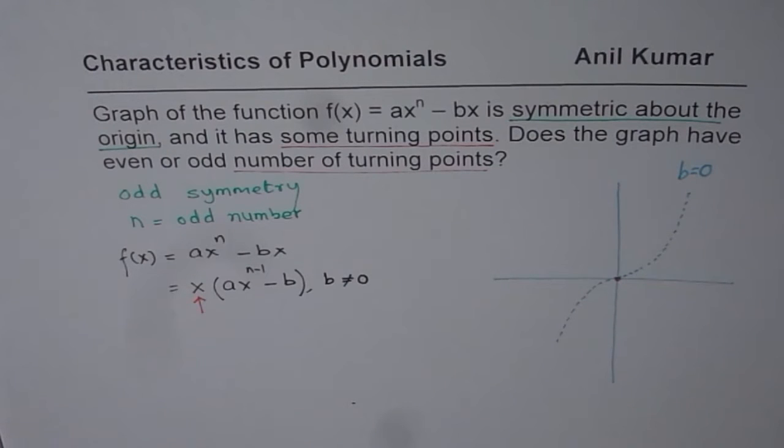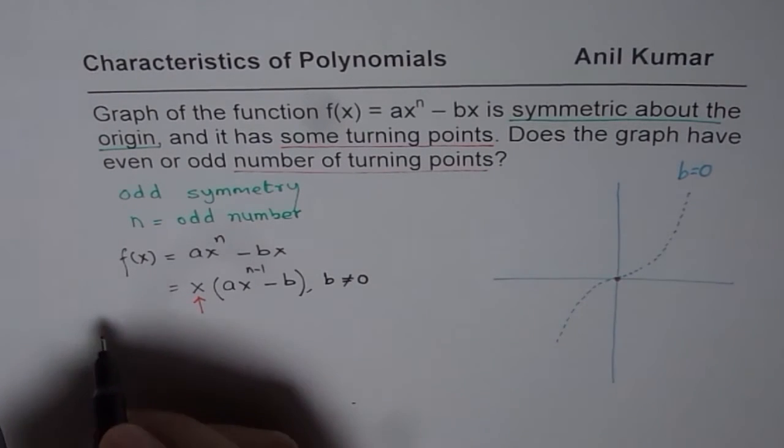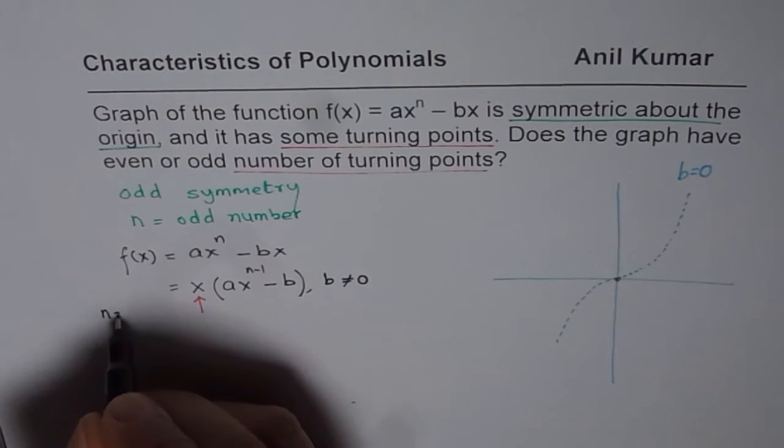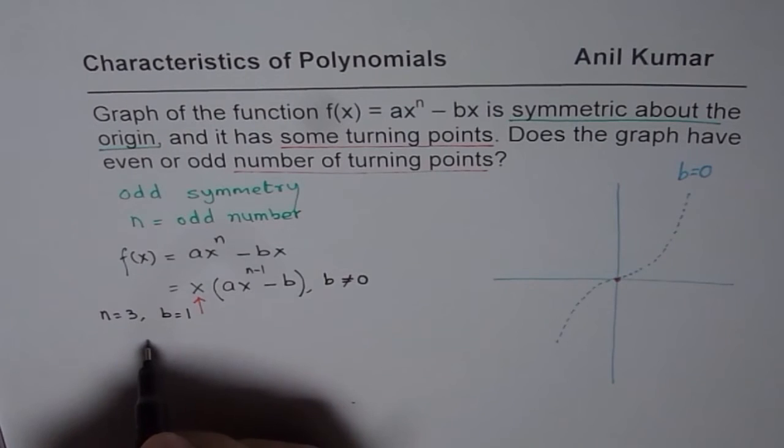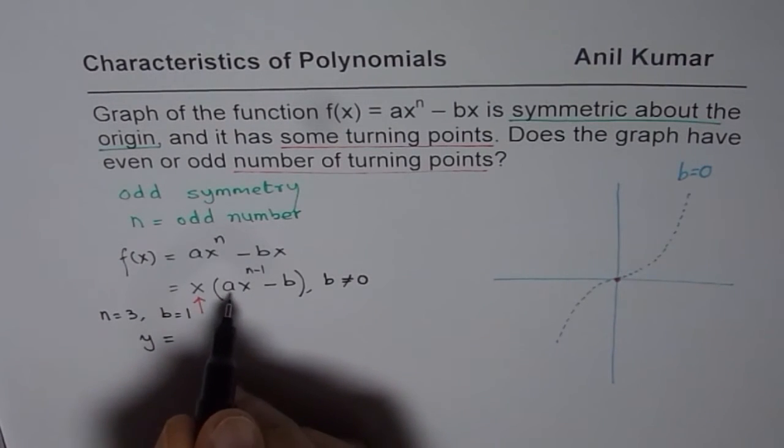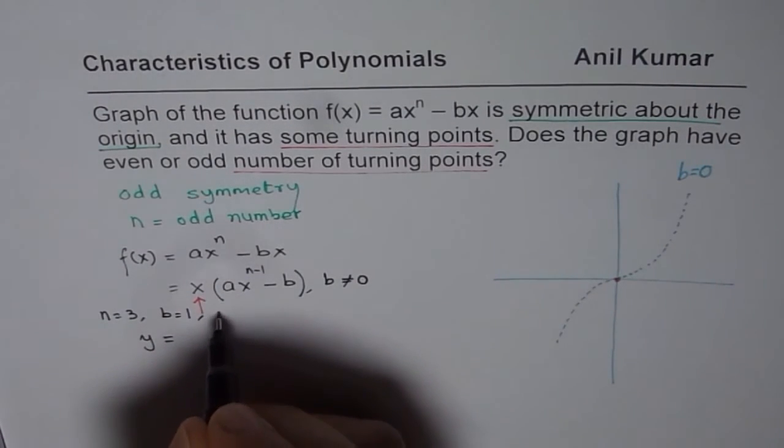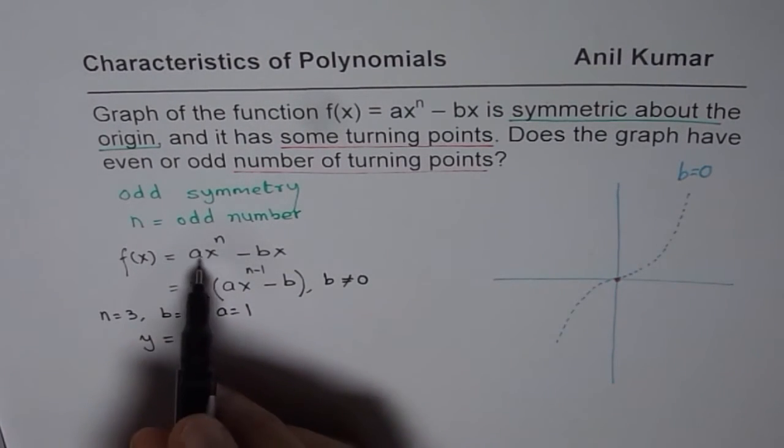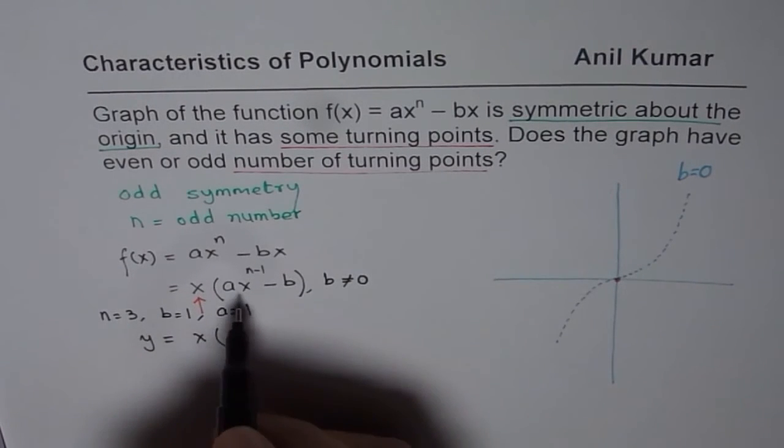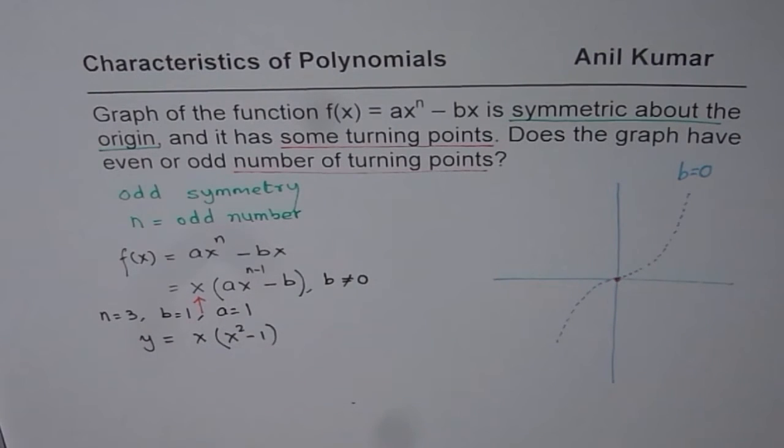Now let us take very simple example. Let us assume that n is equal to 3 and b is equal to 1. So in that case, we can write down a function y equals to, and let me take a as also equal to 1. Very simple. So in that case, I could write this function as x times 1 times x to the power of 3 minus 1, so x square minus 1.